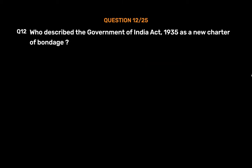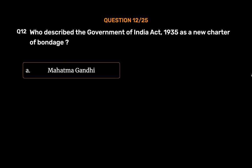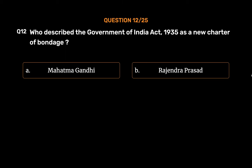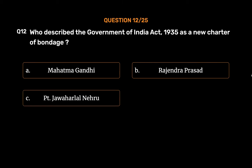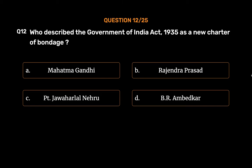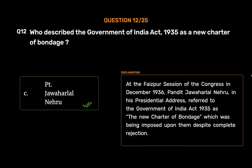Question No. 12. Who described the Government of India Act, 1935 as a new charter of bondage? Option A. Mahatma Gandhi. Option B. Rajendra Prasad. Option C. Jawaharlal Nehru. Option D. B.R. Ambedkar. The correct answer is Option C, Jawaharlal Nehru. At the Faizpur session of the Congress in December 1936, Pandit Jawaharlal Nehru, in his presidential address, referred to the Government of India Act 1935 as the new charter of bondage which was being imposed upon them despite complete rejection.